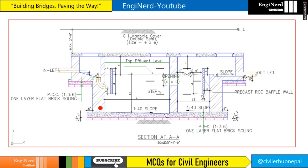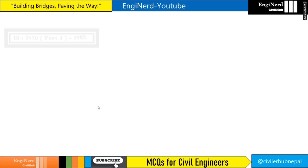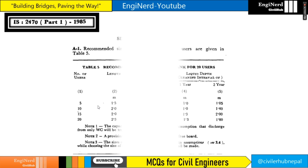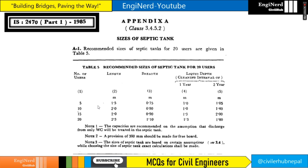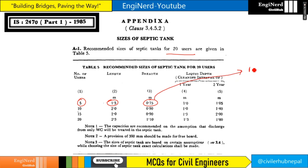Here is the section of the particular septic tank. If you consider IS 2470, different sizes of septic tanks are given. The recommended size for 5, 10, and 20 users is listed — for instance, 1.5 meters and 0.75 meters — and the liquid depth depends upon the cleaning interval.